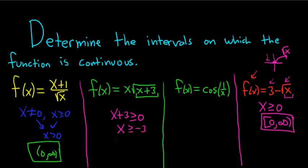Then you just subtract 3, and in this case, the interval on which it's continuous would be bracket negative 3 to infinity. And again, this is just the domain.